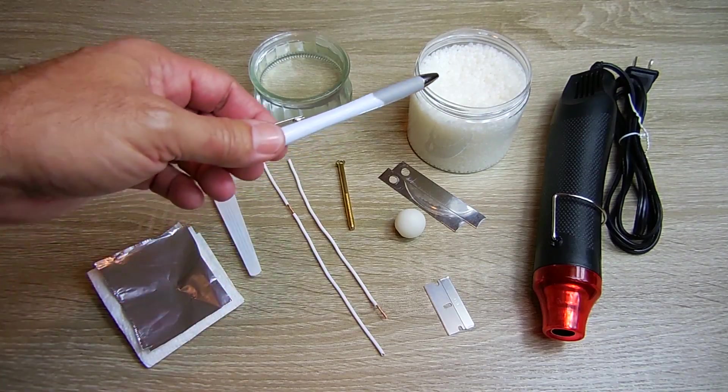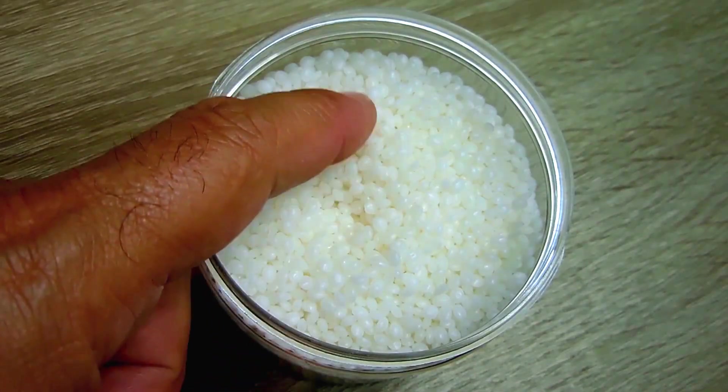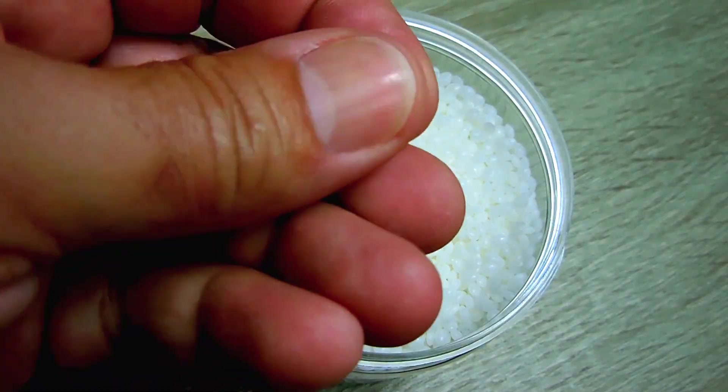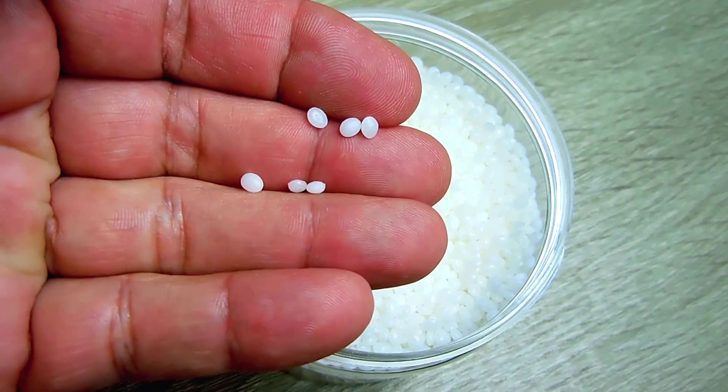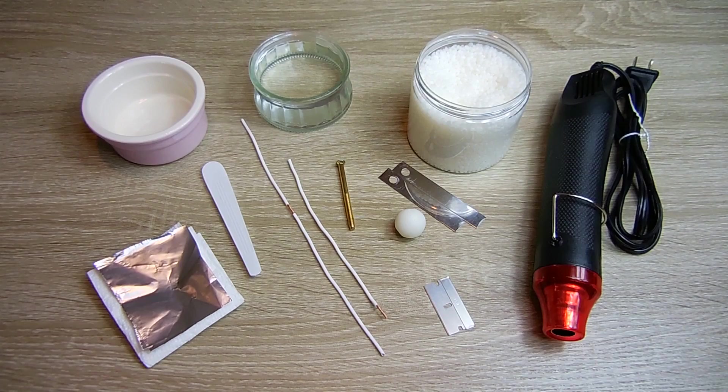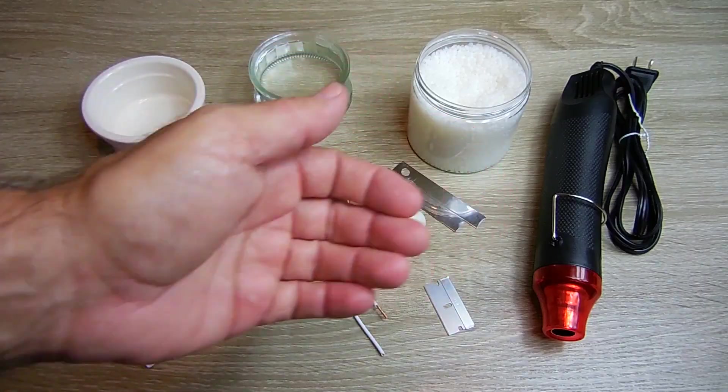What you see right here are white thermoplastic beads. Let me show you a few of them, very tiny. They feel very similar to nylon and teflon. They're a non-toxic, biodegradable polyester material and it's designed to melt using hot water or a heat gun.